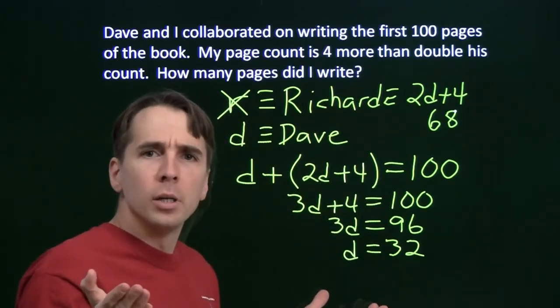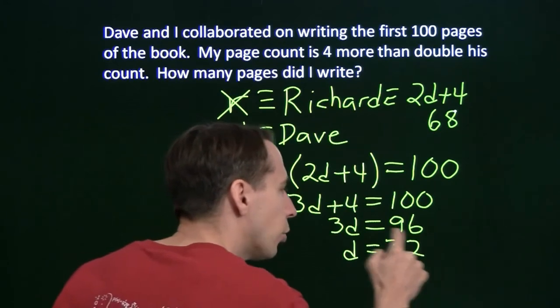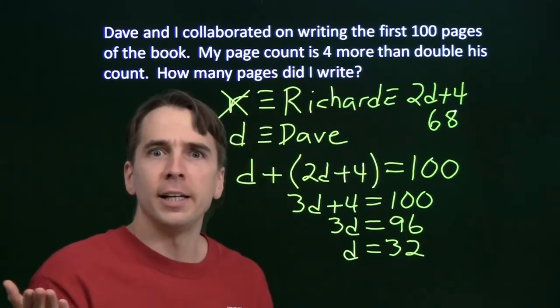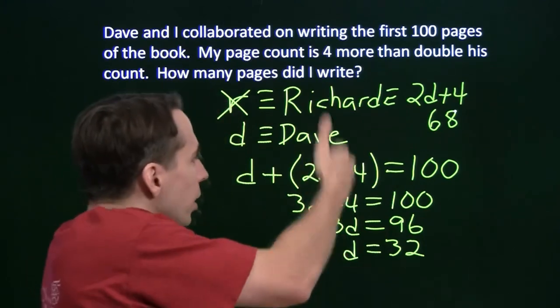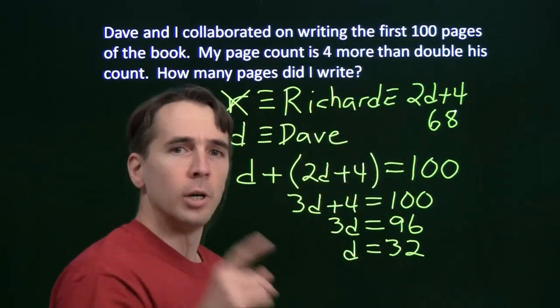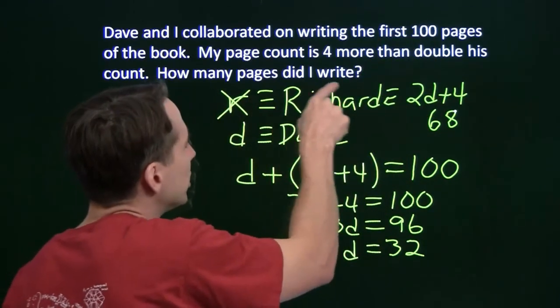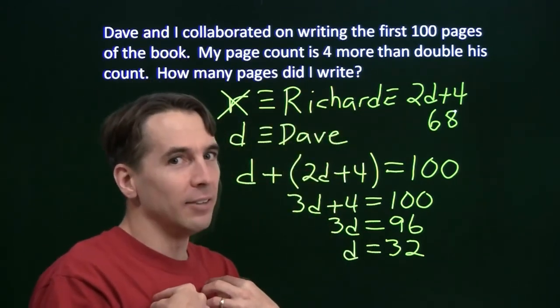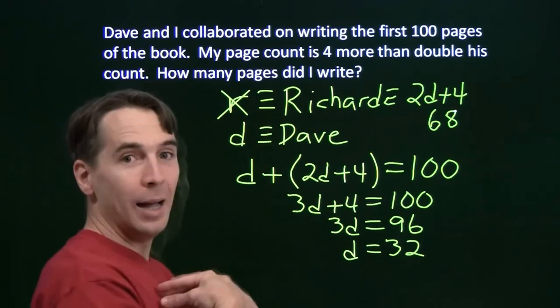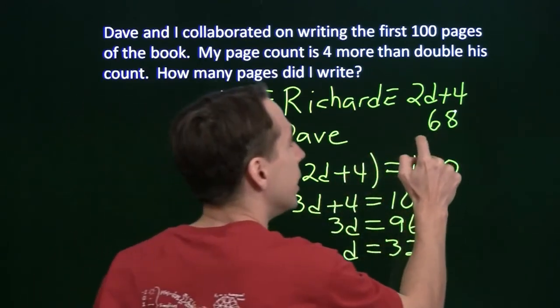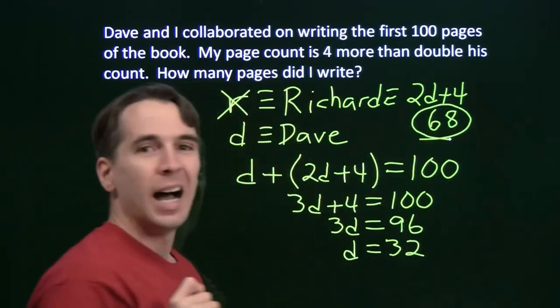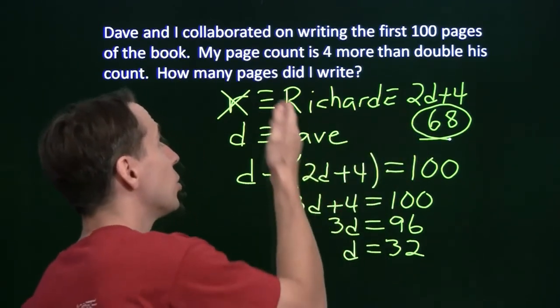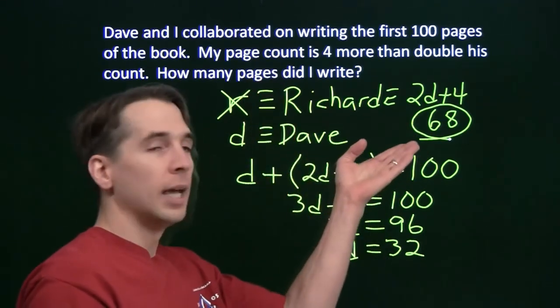Where are we? What's our answer? If you circle 32 and call 32 your answer, you're going to find out that you're wrong. Where did our equations go wrong? We checked our answer. Read the question at the end. How many pages did I write? I'm not Dave. I'm not that smart. I'm me. How many pages did I write? I wrote 68 pages. Our answer is 68. We checked our answer. We answered the question. And we're done.